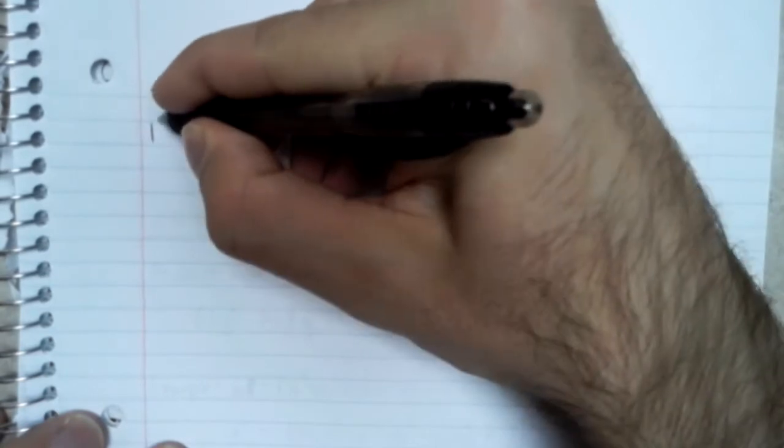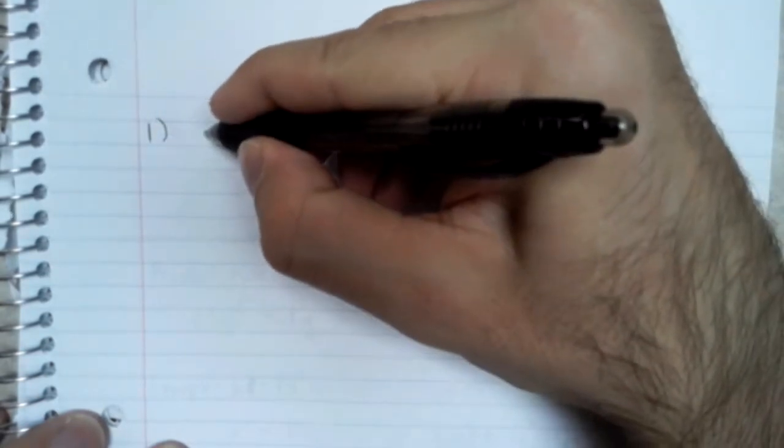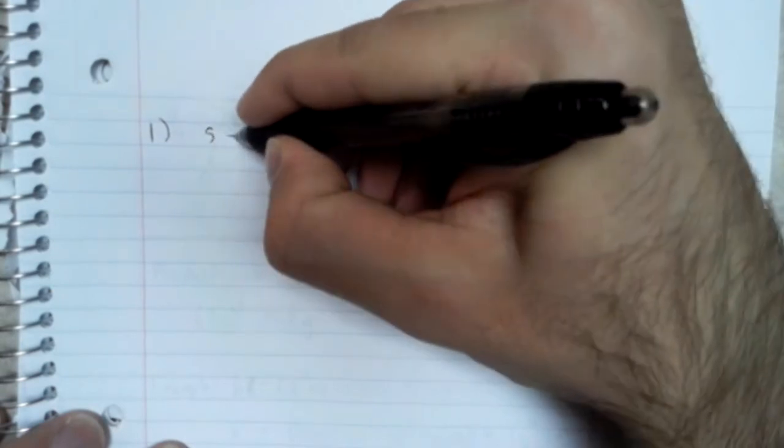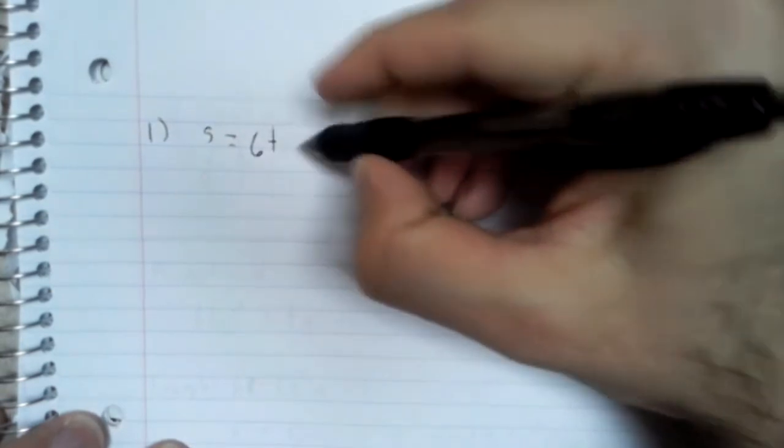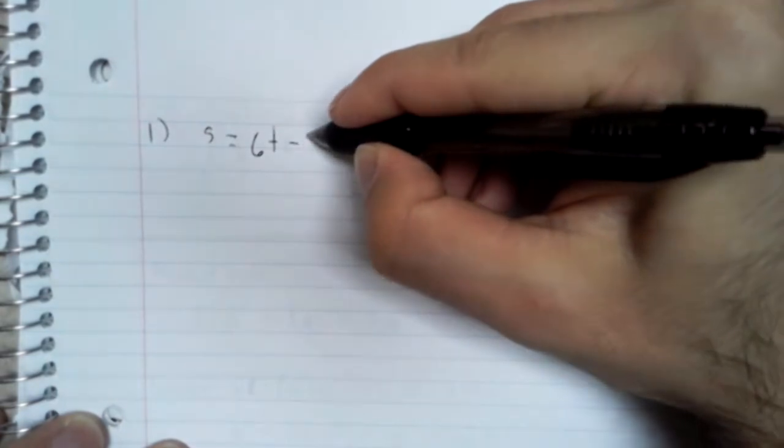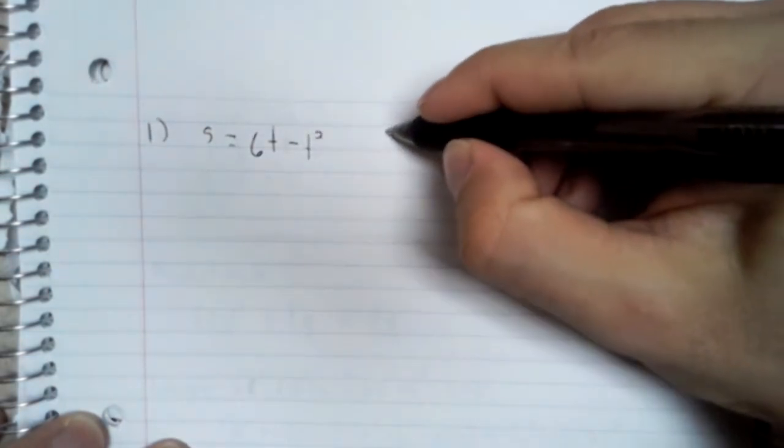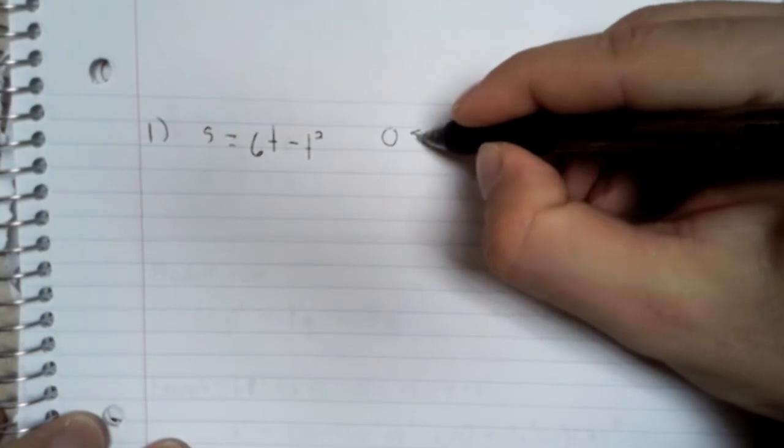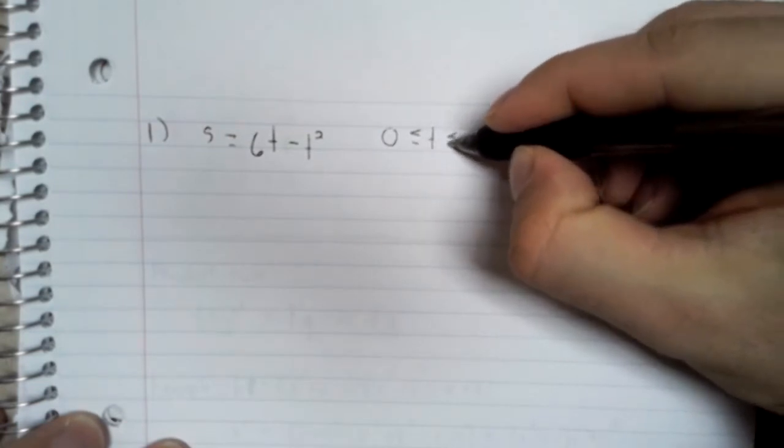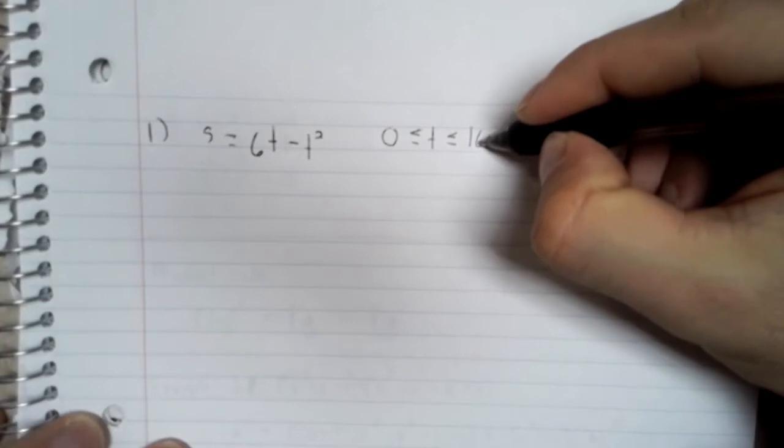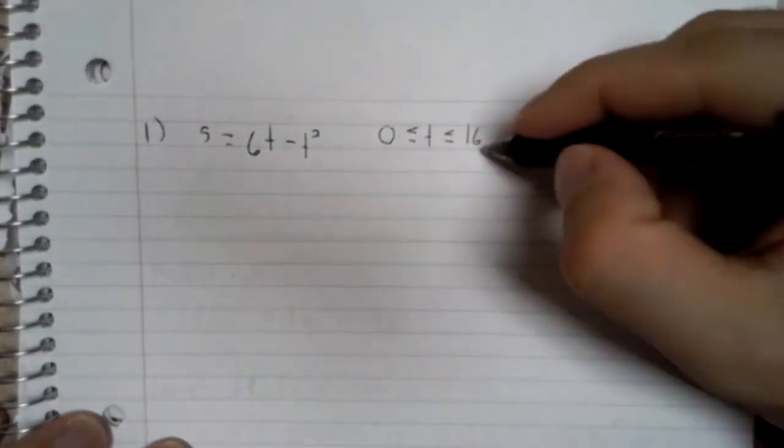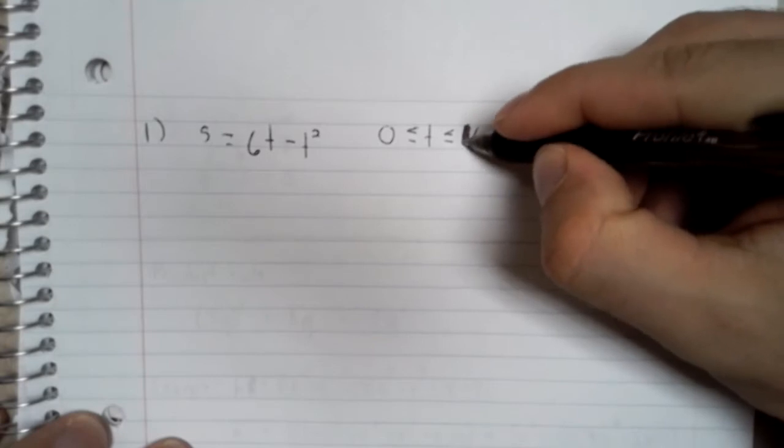Hi, I'm your instructor, Reverend Moses. I'm taking 3.4 number 2. So we've got this position function s equals 6t minus t squared, and t is on an interval from 0 to 6.